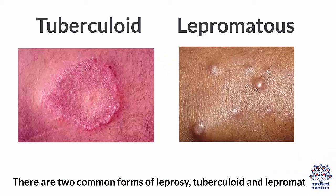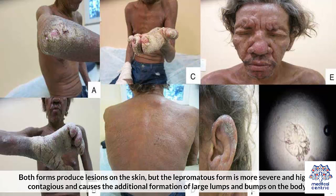There are two common forms of leprosy: tuberculoid and lepromatous. Both forms produce lesions on the skin, but the lepromatous form is more severe and highly contagious, and causes the additional formation of large lumps and bumps on the body.